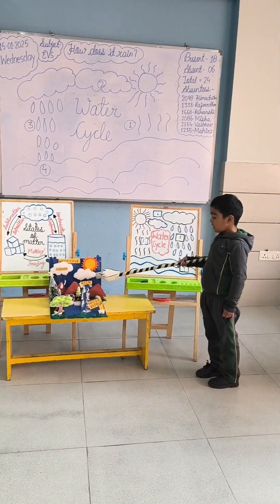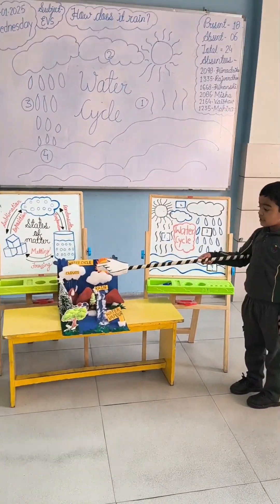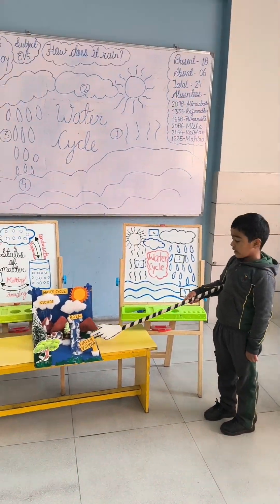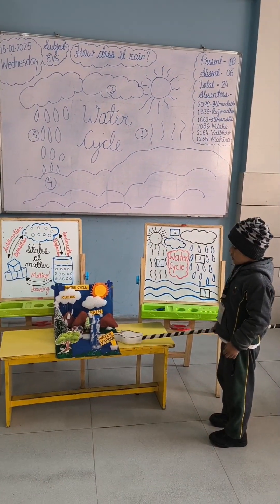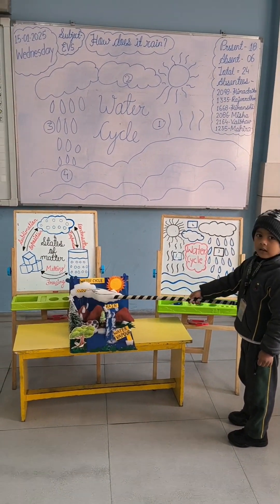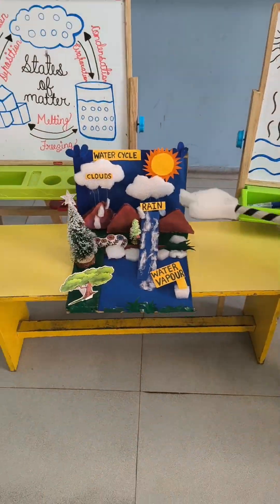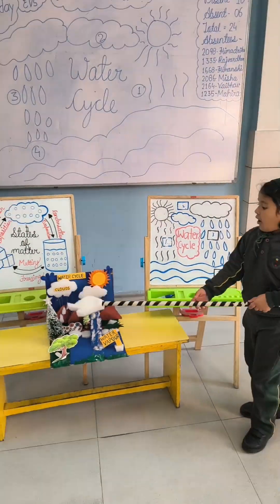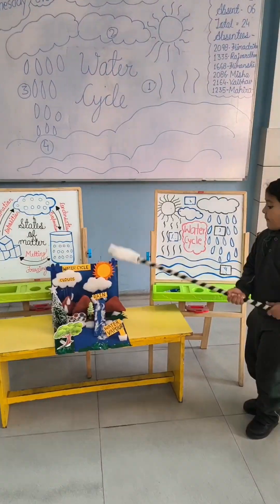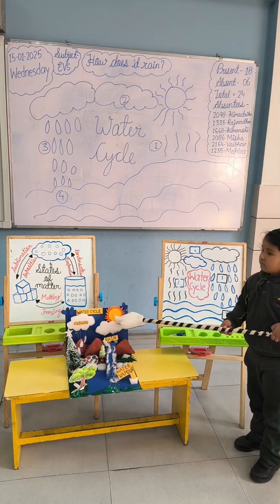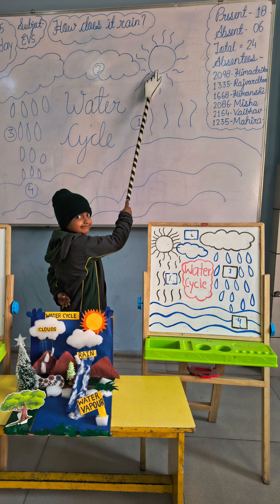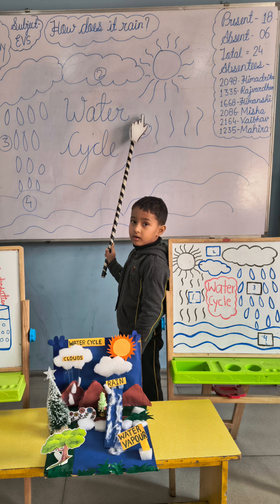Heat turns water into vapor, a gas that rises through the air, and cold makes vapor condense to liquid and fall back down everywhere. Evaporation.